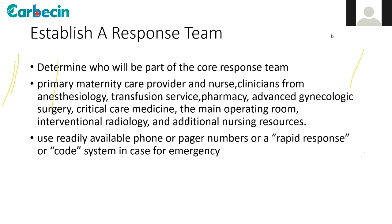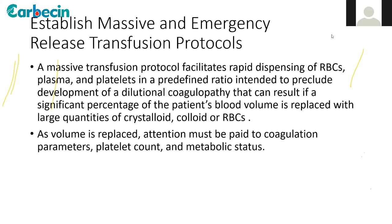Establish a response team and determine who will be part of the core team. As the obstetrician, take a helicopter view of the situation and communicate with your team. The team should include the primary maternity care provider, nurse clinicians, anesthesiology, transfusion service, pharmacy, advanced gynecological surgery, critical care, interventional radiology, and additional nursing resources. Have readily available phone numbers or a rapid response code system — a HEMORR code for labor room is recommended, covering both hemorrhage and hypertension.